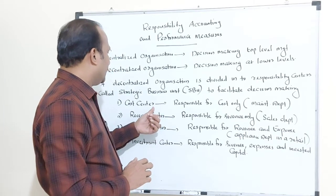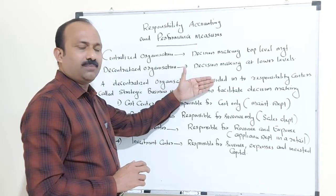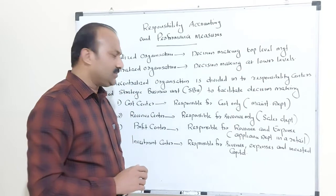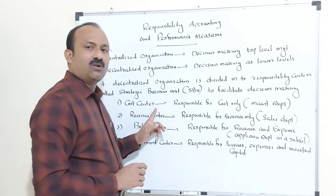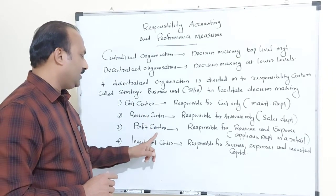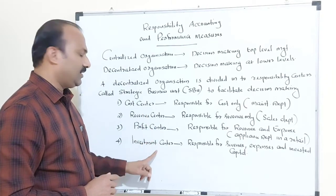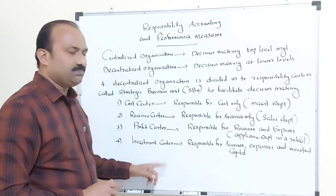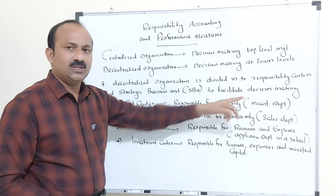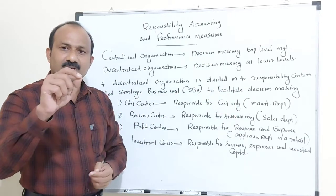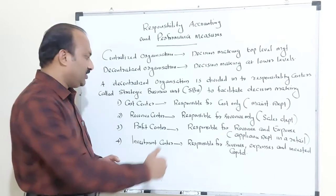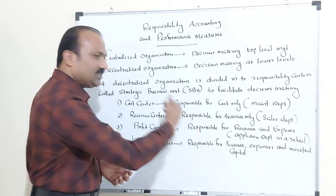A decentralized organization can be divided into different Responsibility Centers: Number one, Cost Center; Number two, Revenue Center; Number three, Profit Center; Number four, Investment Center. The main purpose of dividing into these centers is to facilitate decision making.